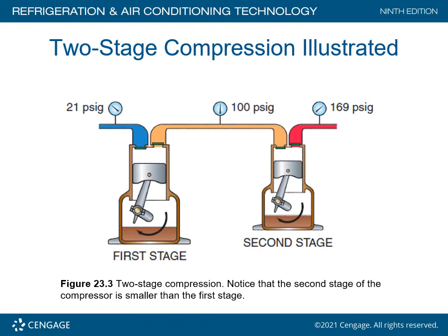Figure 23.3 in the textbook illustrates a standard two-stage reciprocating compressor. Notice the second stage is smaller than the first. The first stage draws vapor in at 21 PSIG, compresses it up to 100 PSIG, and discharges directly into the second stage, which increases pressure to 169 PSIG. Remember, this is utilized when you have more than a 10 to 1 ratio.